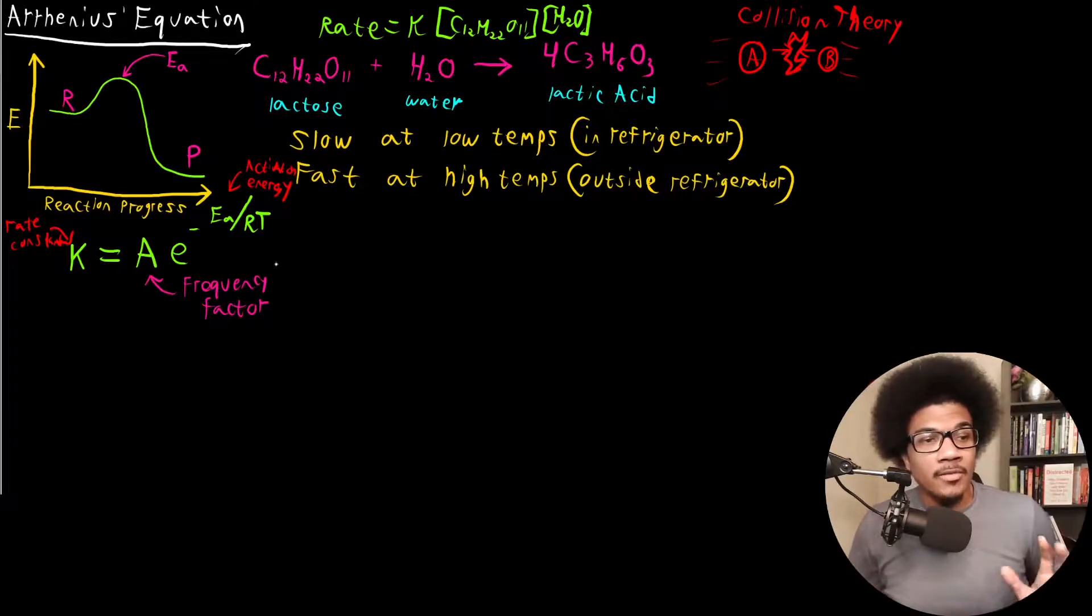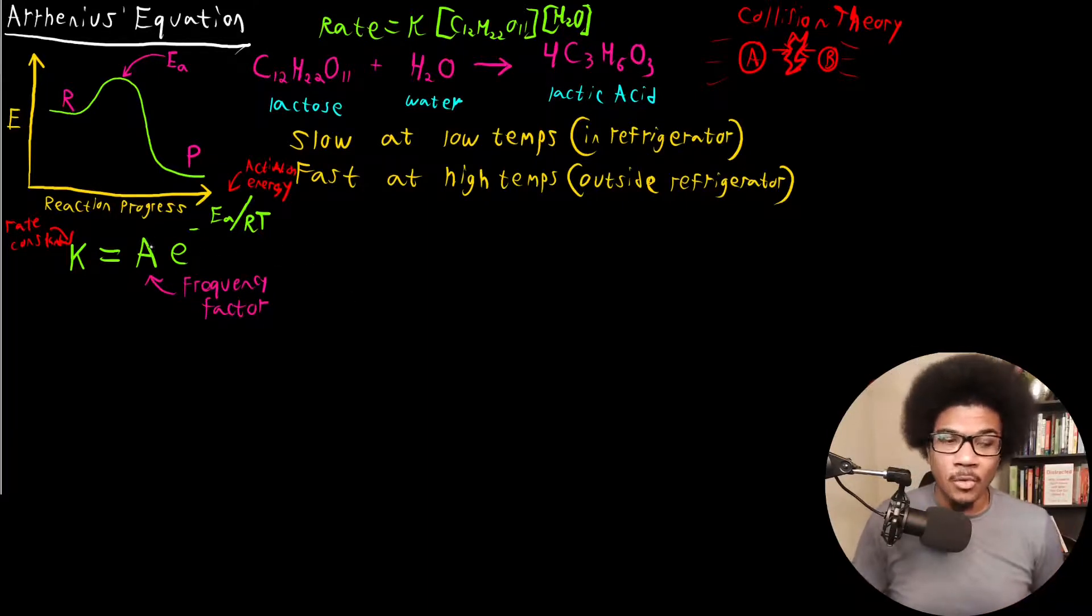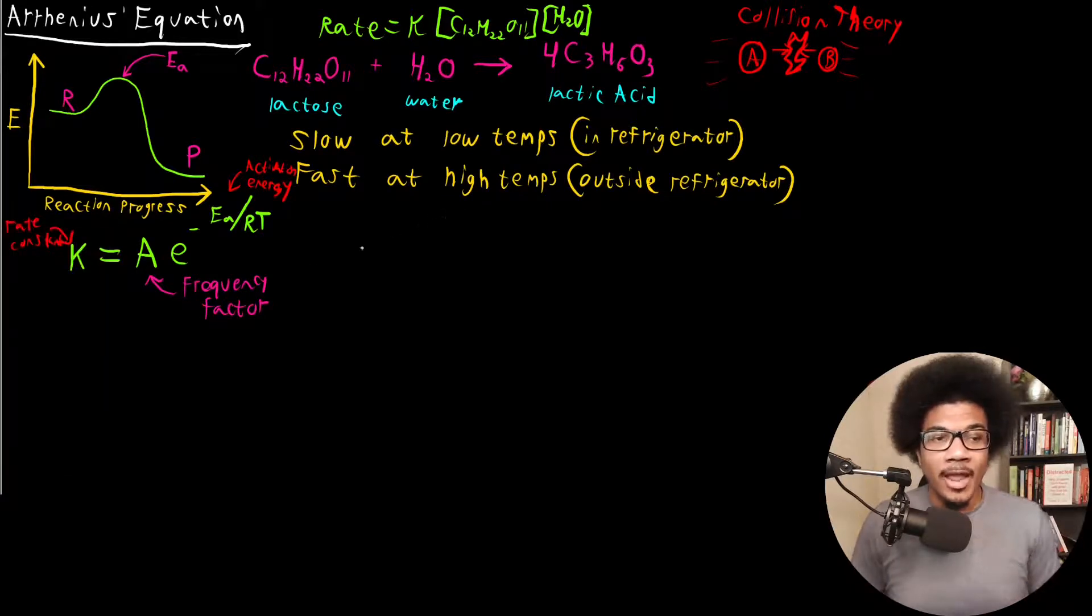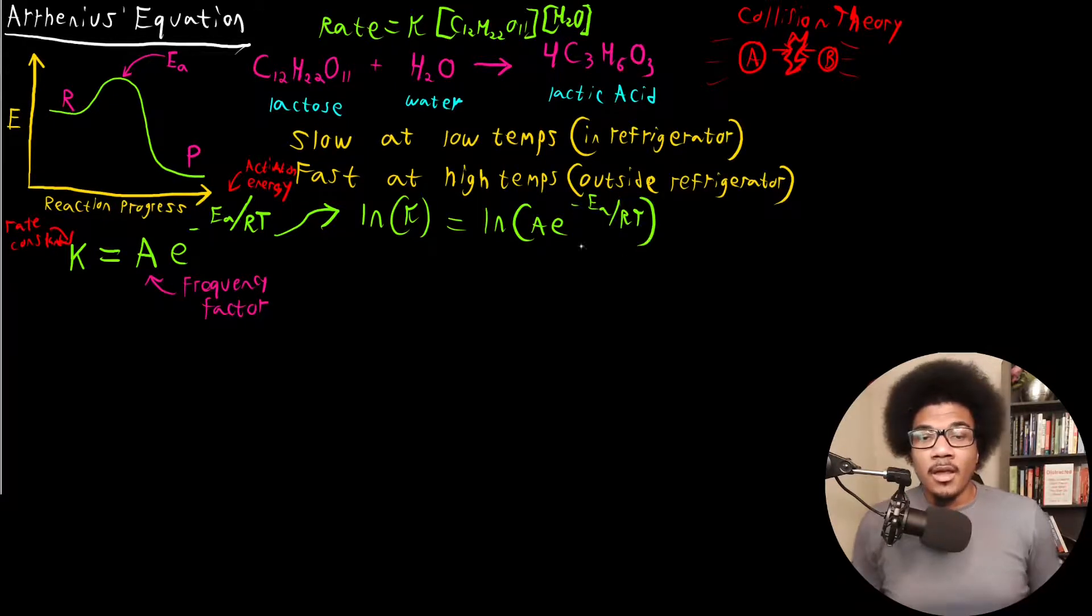Okay, so this is one form of Arrhenius' equation. Now, another form that we can get is called the linear form of Arrhenius' equation. In order to get that, we're going to have to do a little algebra. So what I want to do first is just take the natural log of both sides. So we take the natural log of K, and we take the natural log of A times E to the negative E sub A over RT. Now, obviously, this is valid since we're doing the same thing algebraically on both sides. We still maintain correct algebra.